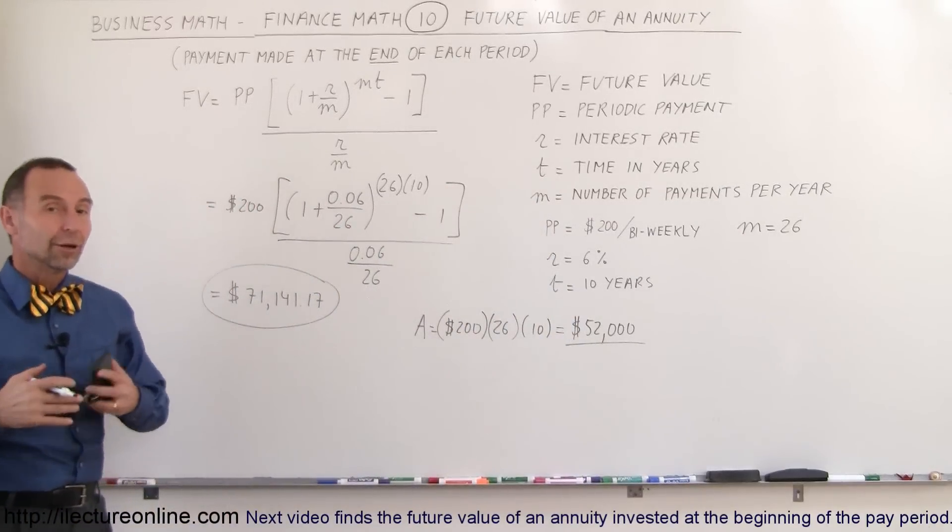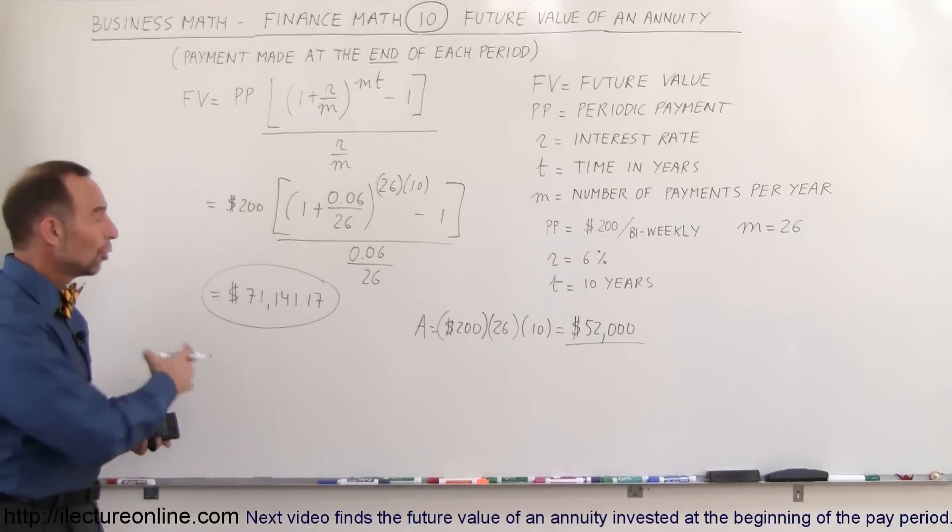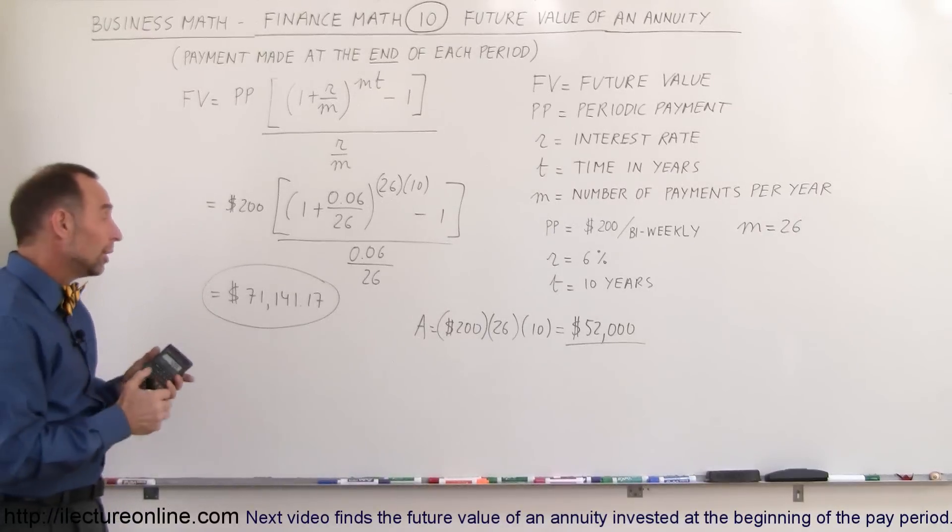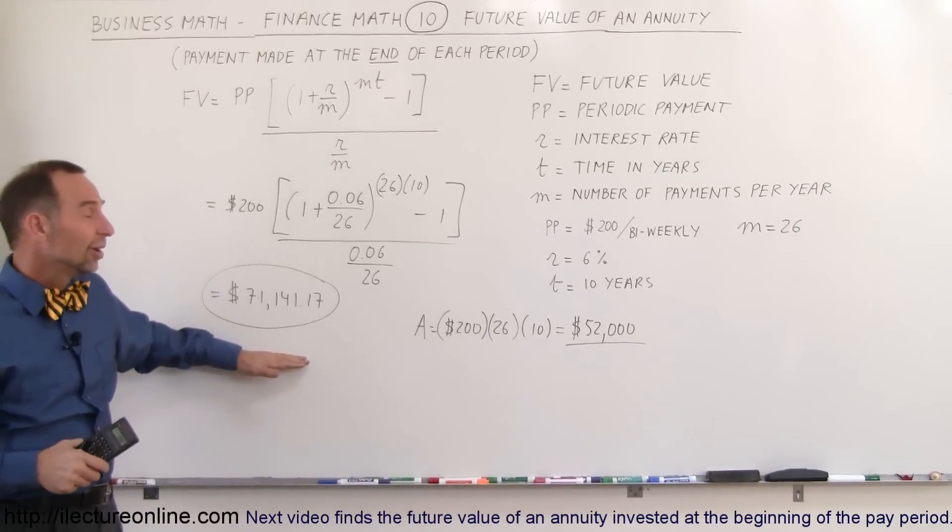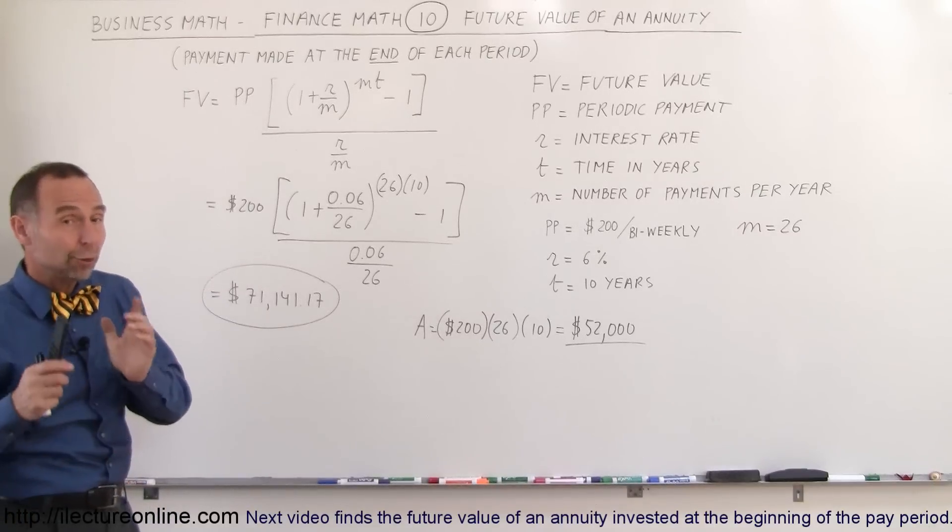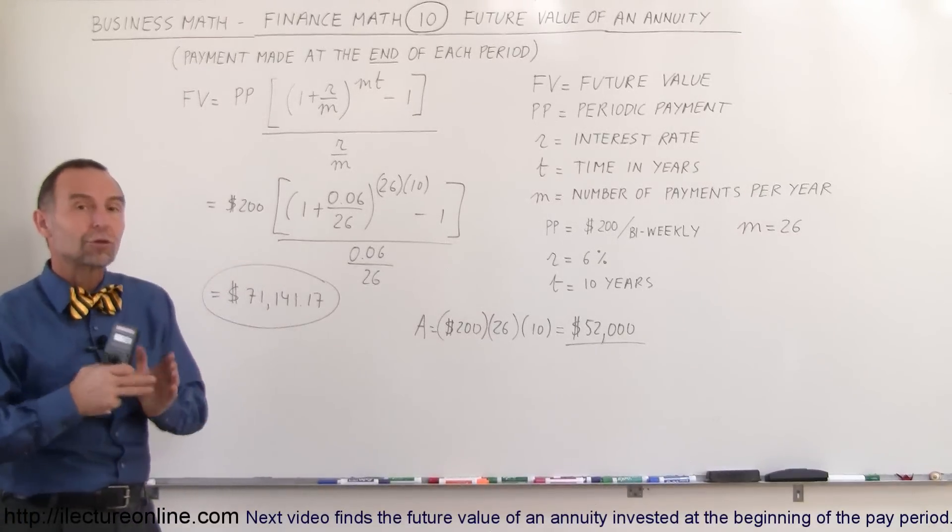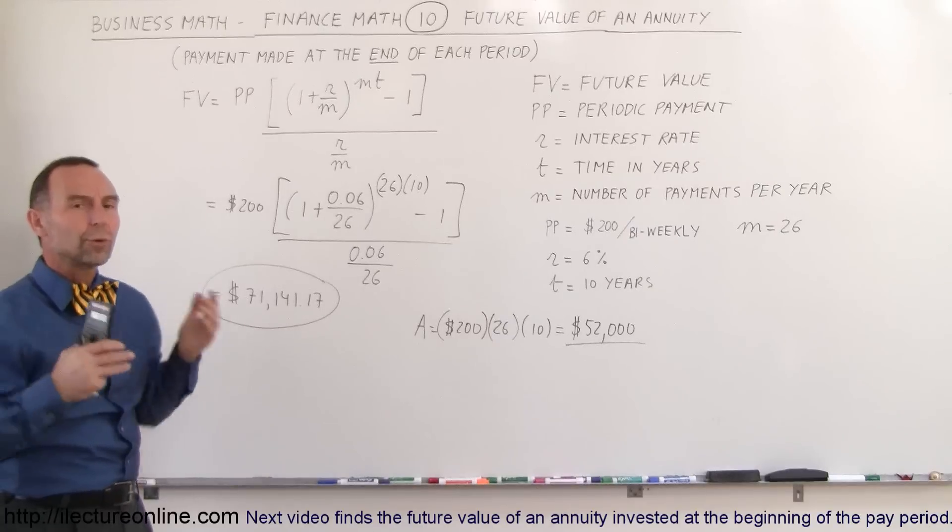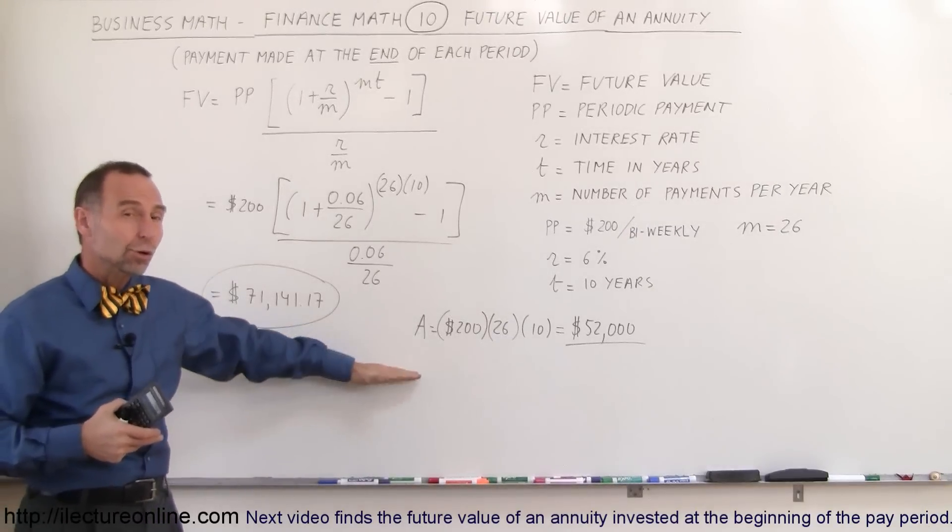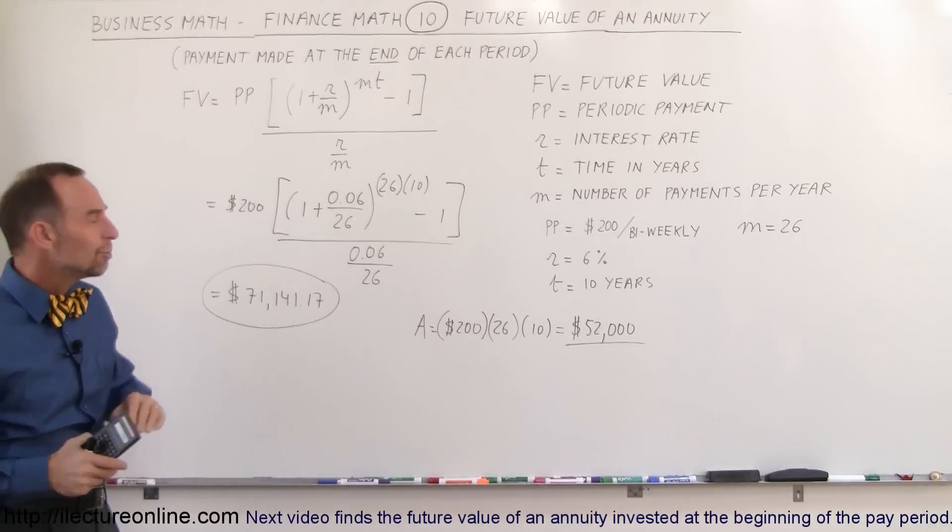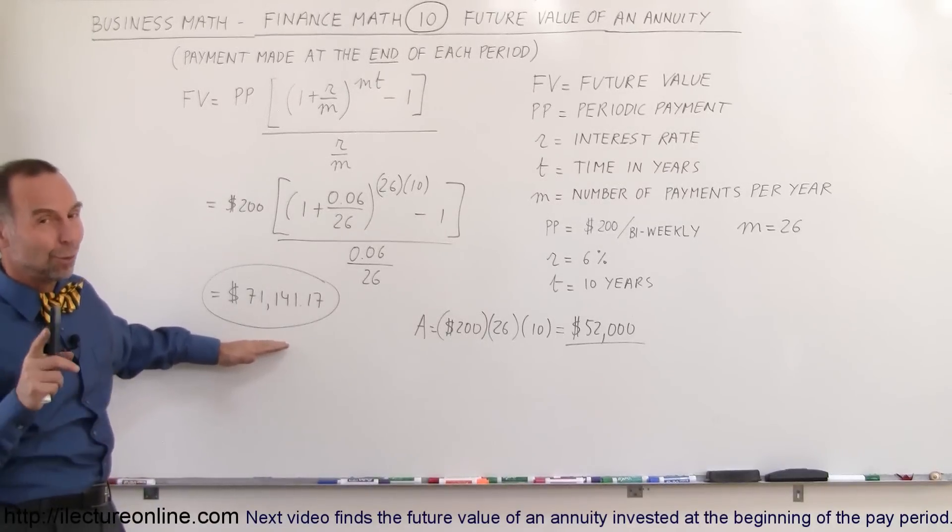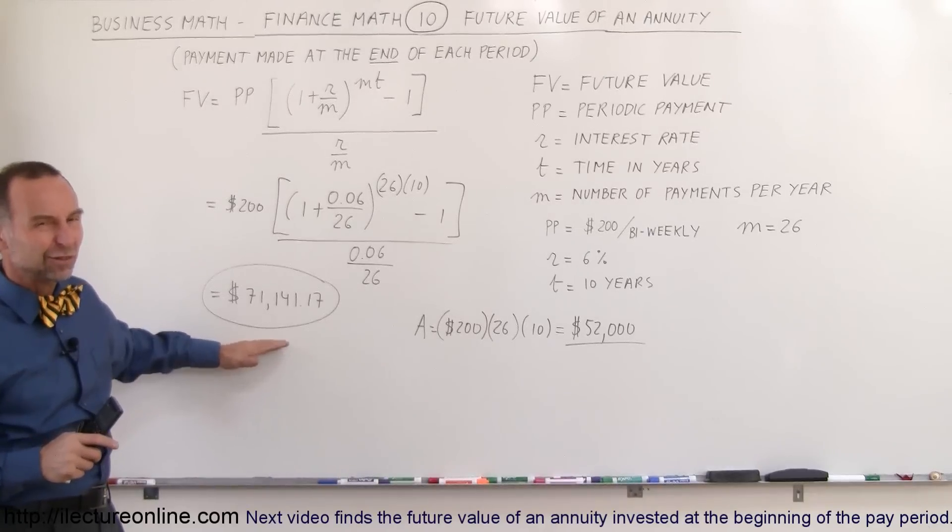But at the end we end up with $71,000. So we end up with about a $19,000 profit or interest earned over that investment. Now you say, well, that doesn't seem like a lot. And true enough, if you only do it for 10 years, it doesn't really accumulate that much. But the power of annuities, the power of 401k plan, is to do it over your entire lifetime. When you start working, when you get your first job, and you start taking money out of your paycheck and putting in annuity, and let's say you do it for 40 years, you'd be amazed how big this number can get. It doesn't look very impressive after 10 years, but boy, what does it look like after 40 years?